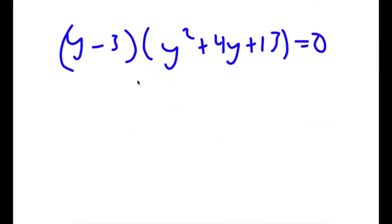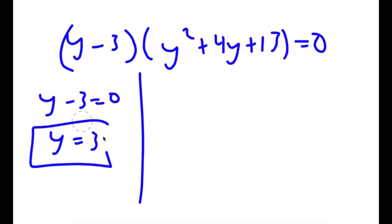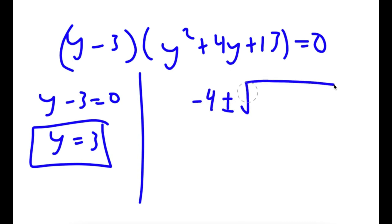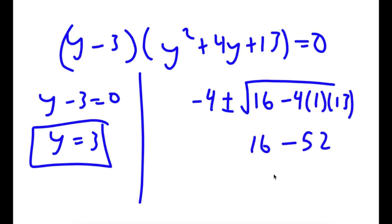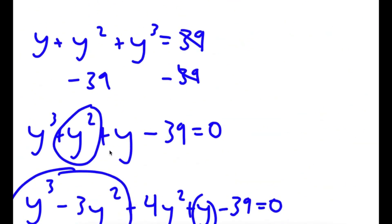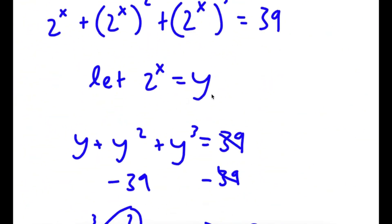This gives me two equations. I have y minus 3 equals 0, meaning y equals 3. And I have y squared plus 4y plus 13 equals 0. To solve the quadratic, I use the quadratic formula: negative 4 plus or minus the square root of 4 squared minus 4 times 1 times 13, over 2. The discriminant is 16 minus 52, which is negative 36. You can't take the square root of a negative number, so this has no real solutions. My only solution for y is 3.